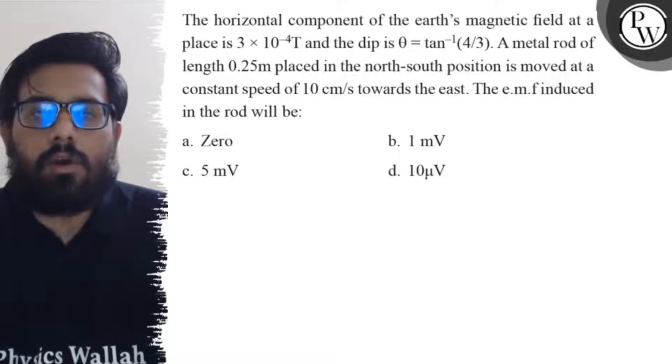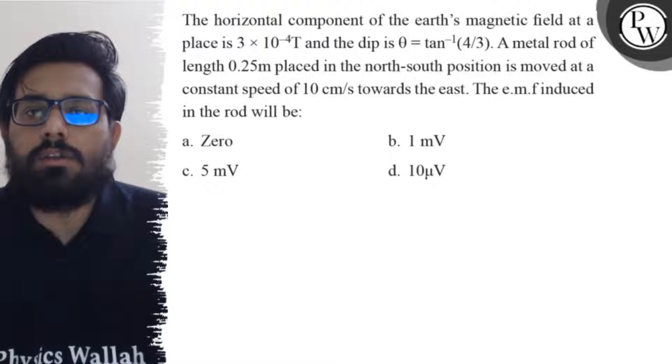A metal rod of length 0.25 meter placed in the north-south position is moved at a constant speed of 10 centimeter per second towards the east.